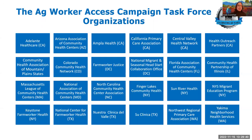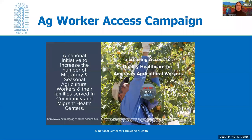We are presenting in collaboration with the Ag Worker Access Campaign Task Force. The Ag Worker Access Campaign was launched in 2015 as a joint effort by the National Center for Farm Worker Health and the National Association of Community Health Centers. Along with health center staff and other ag worker advocates, we knew that more could be done to increase access to quality health care for America's agricultural workers and their family members. We've seen steady increases in the number of ag workers served in health centers since the campaign's launch leading up to 2020.